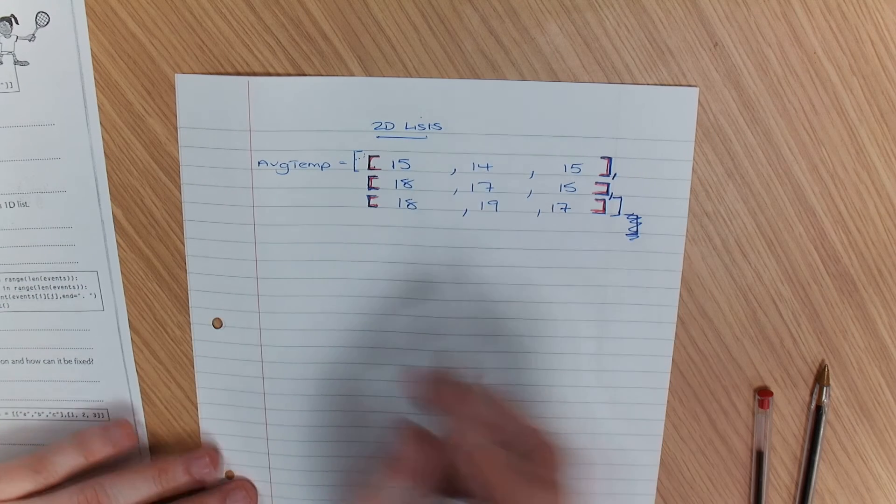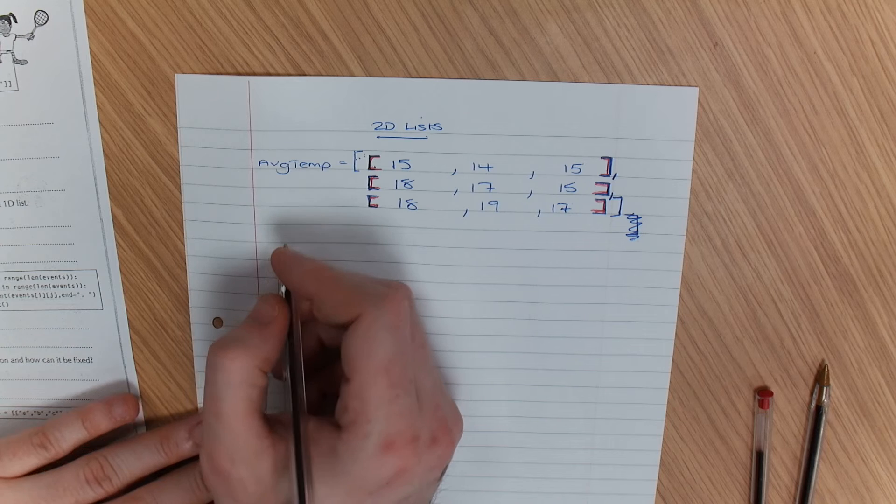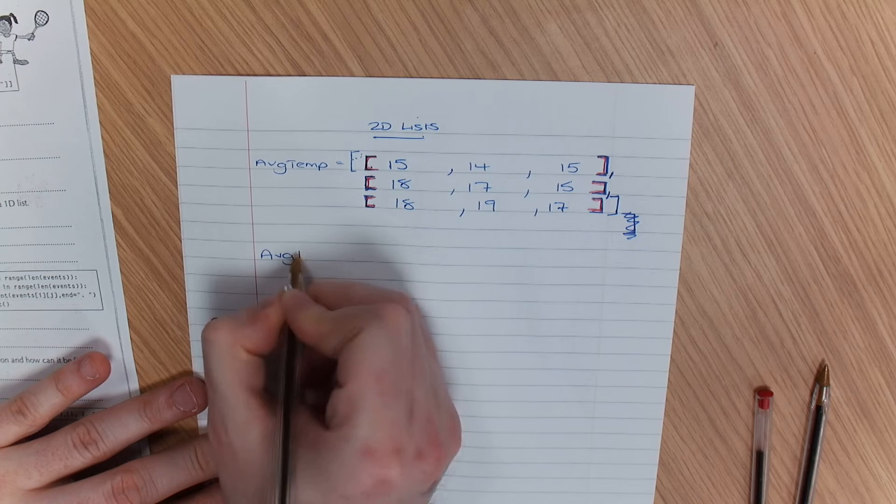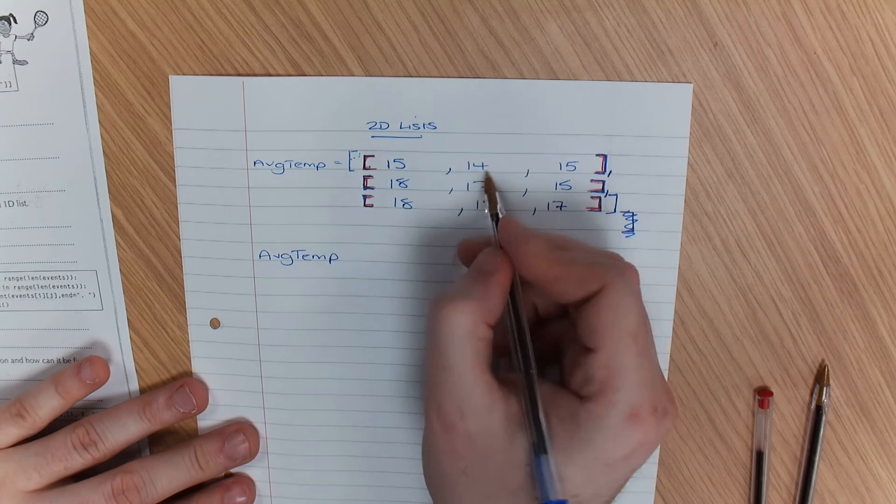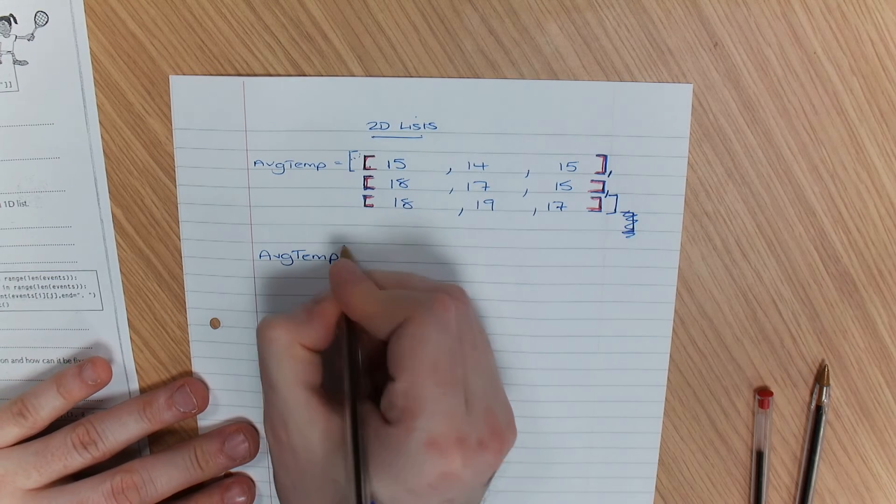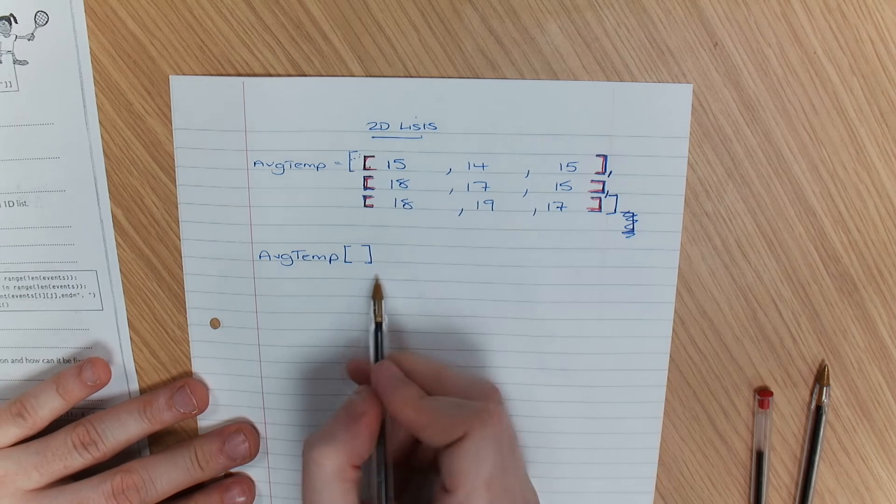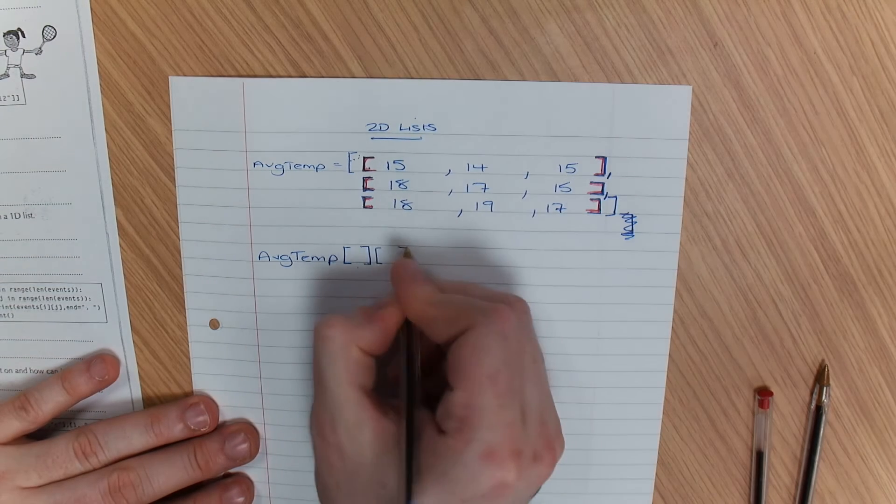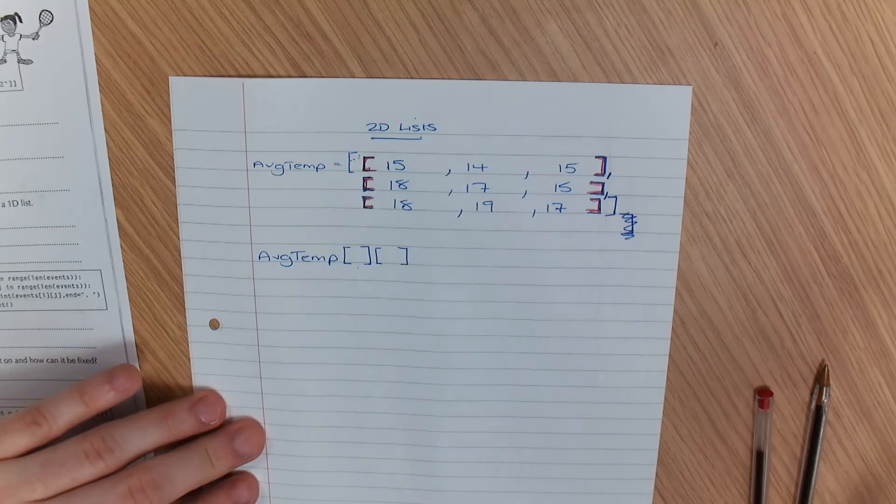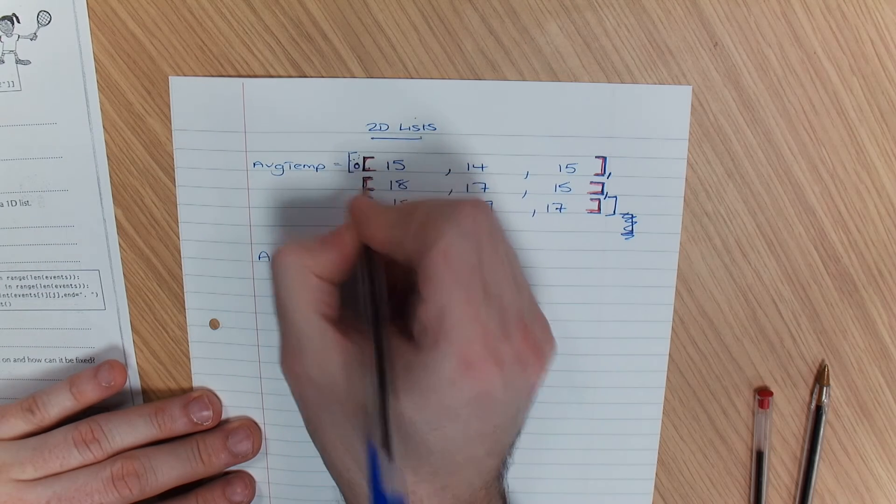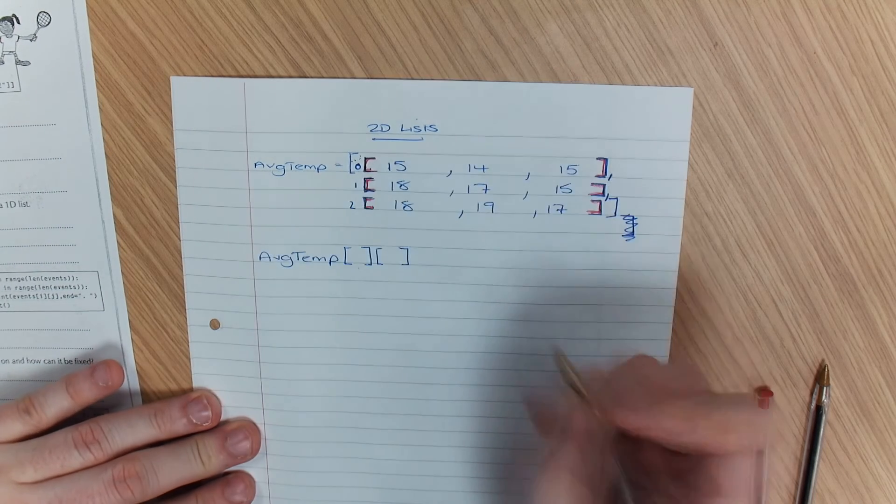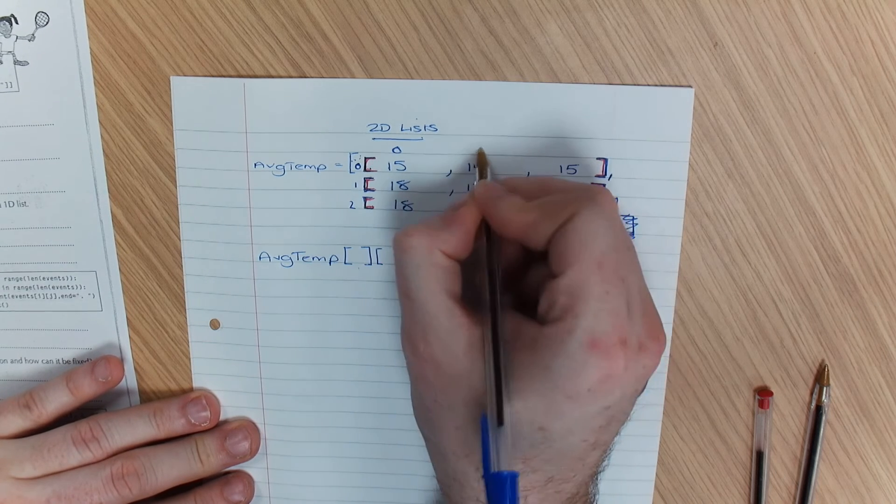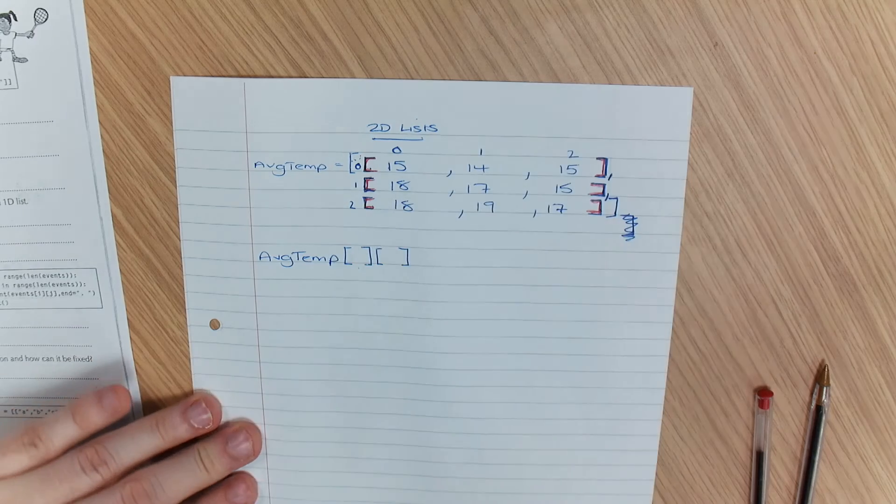So if I was to get the number 14, what I would need to do is I would put - your first square bracket is the row that you're on, and the second is the position in that row. So that would be row 0, 1, 2. That would be position, column 0, 1, 2.